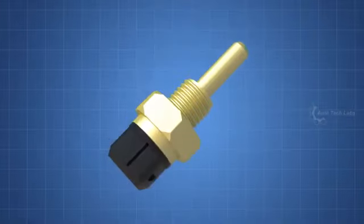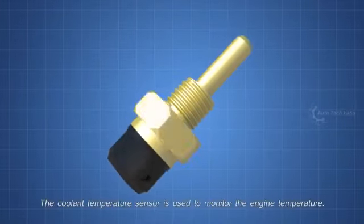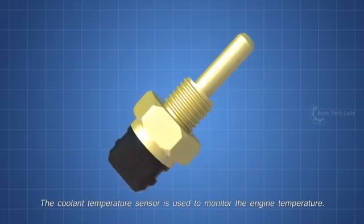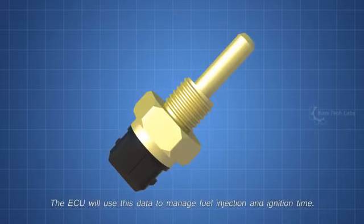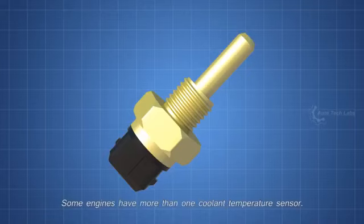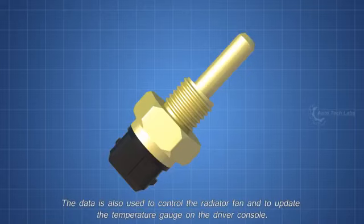Next, the coolant temperature sensor. The coolant temperature sensor is used to monitor the engine temperature. The ECU will use this data to manage fuel injection and ignition time. Some engines have more than one coolant temperature sensor. The data is also used to control the radiator fan and to update the temperature gauge on the driver console.